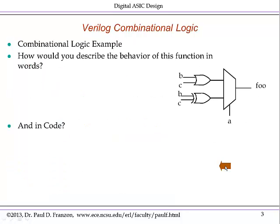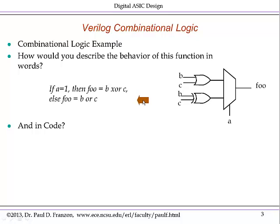Now, let's look at combinational logic, and take a similar approach to producing a piece of Verilog that models the behavior of combinational logic. We have a simple logic block here with a multiplexer, an OR gate, and an XOR gate. How would you describe, in English, the behavior of this block? You would write something like this: if A equals 1, then the output FU equals B XOR C; else FU equals B OR C.